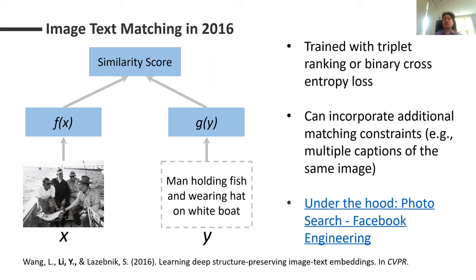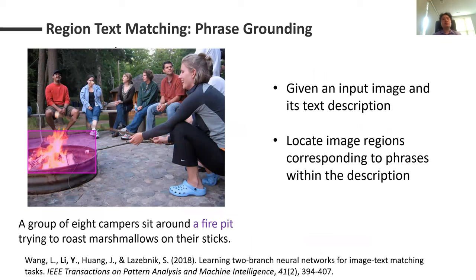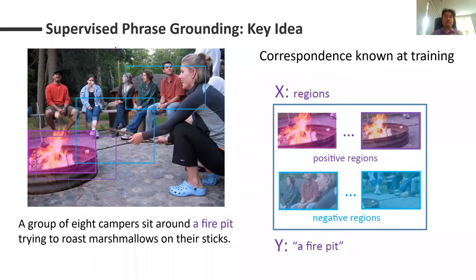At that time, this idea worked pretty well and got incorporated into some products at companies. We then moved forward to see whether, instead of just doing image and text query matching, we could look at image regions and tokens within the text query. This is the phrase grounding problem: given an image and a text description, we try to figure out which regions of the image correspond to which phrases or tokens in the text description. We take features from different parts of the image and try to match those feature embeddings to different embeddings of those phrases, using exactly the same architecture.